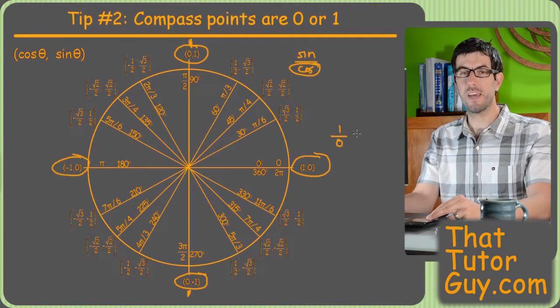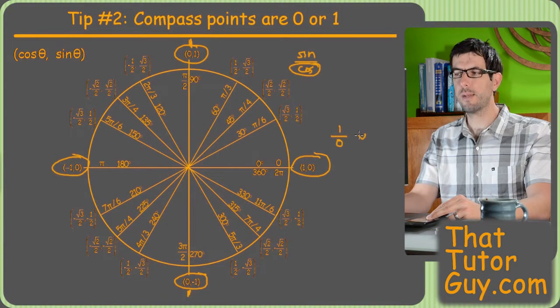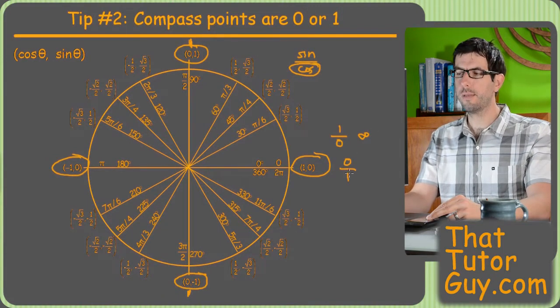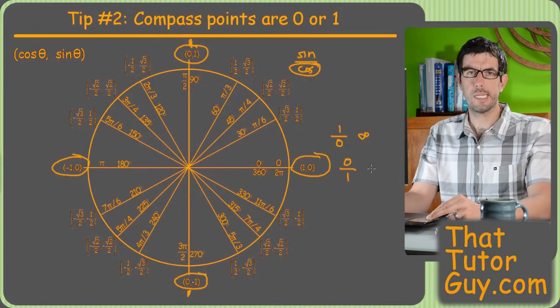But the point is you want to be really careful with undefined. Remember, one over zero is undefined, or sometimes you write infinity, but really the right answer is undefined, whereas zero over one is just zero, it's no big deal.